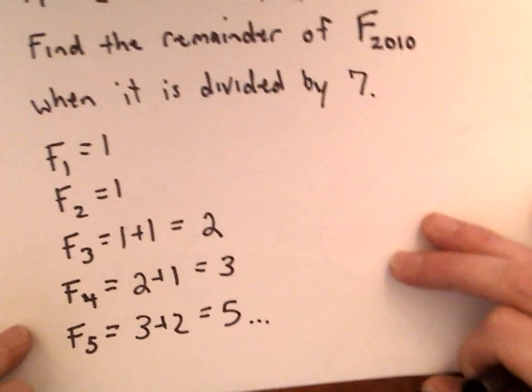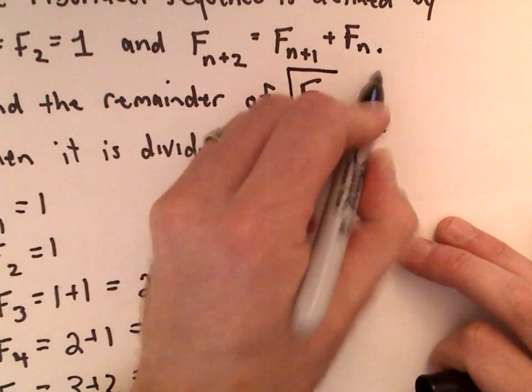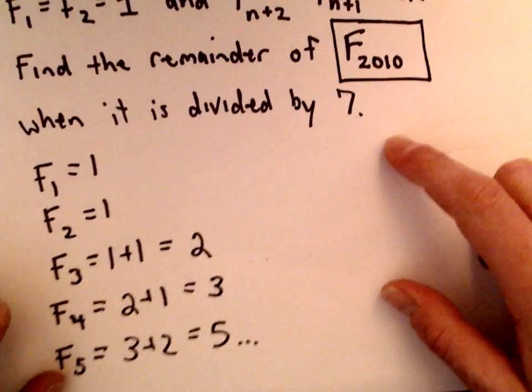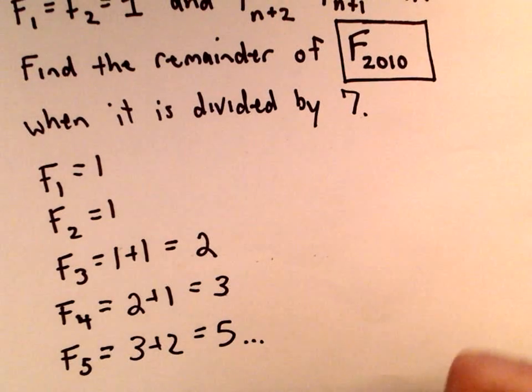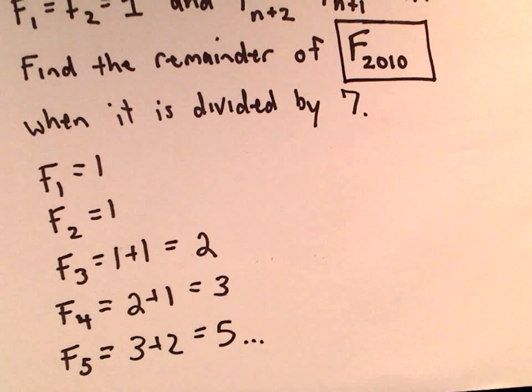Again, a lot of you I'm sure have seen the Fibonacci sequence. So again, eventually you'll calculate this term, F₂₀₁₀, and when you divide it by 7, what is the remainder? That's the question.